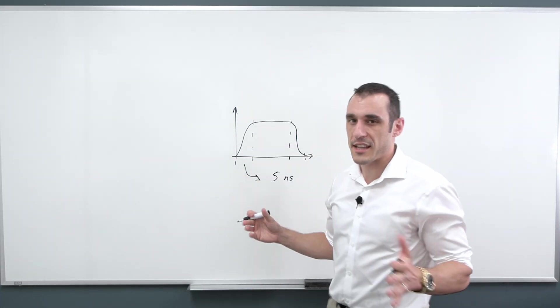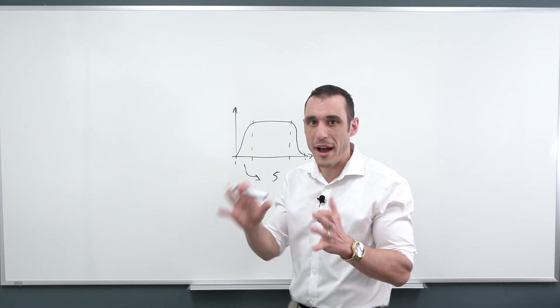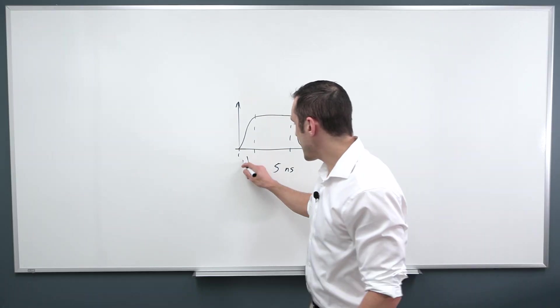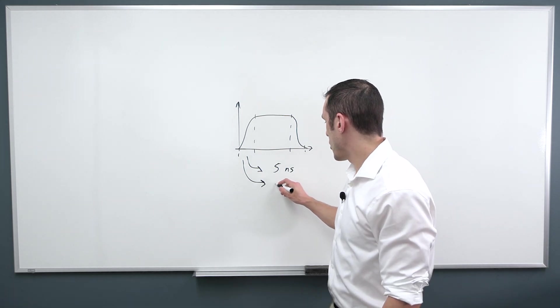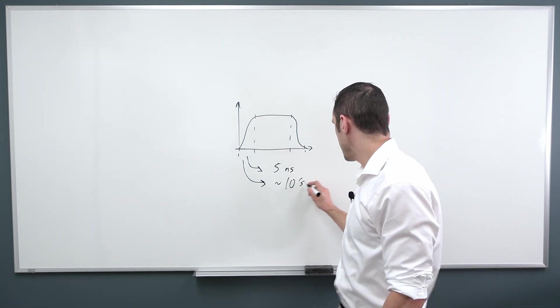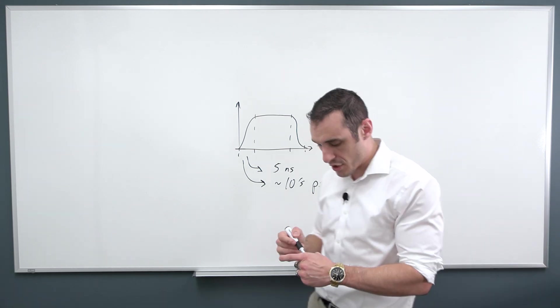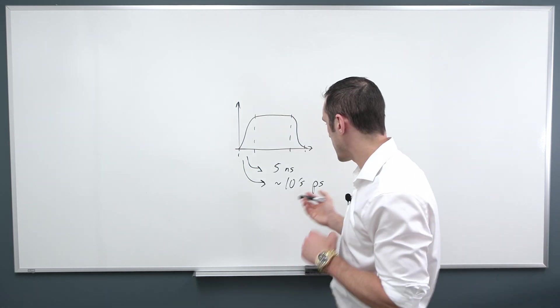So again, five nanoseconds is sometimes taken as about the cutoff for high-speed design. But high-speed signals can get very fast. And the rise times can get as low as about tens of picoseconds. Really just depends on the component and how they're constructed.